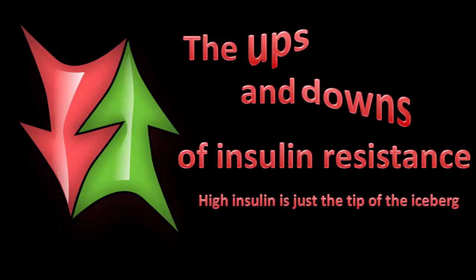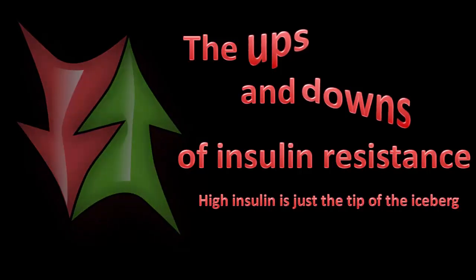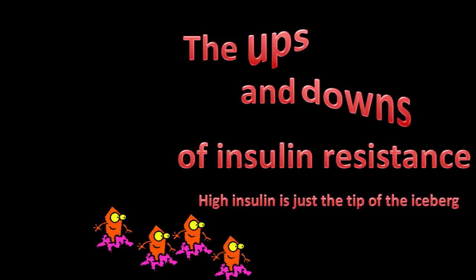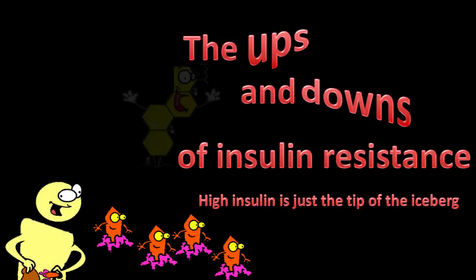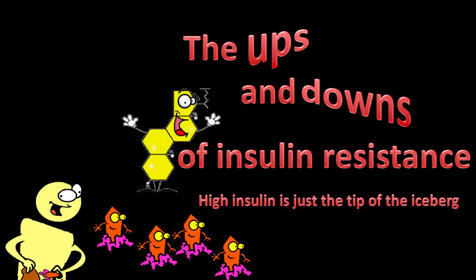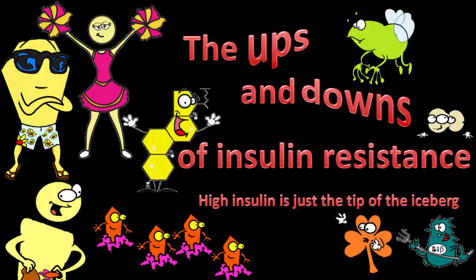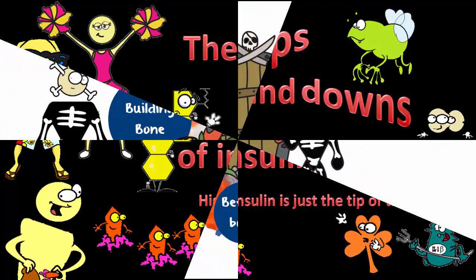When you're insulin resistant — that is, you've got metabolic syndrome — pretty much every chemical in the body is not quite right. Some are up, some are down, and few are actually at physiologically normal levels. Traditionally, the focus is on the big guns: sugar, insulin, and cholesterol. In this series, we take a look at some of the other players, who they are, what they're up to, and how they're part of the state of insulin resistance.